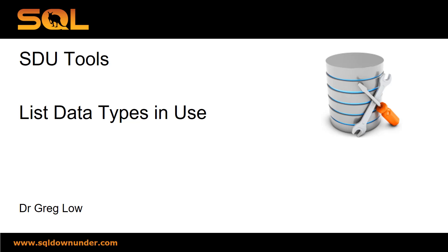Hi, this is Greg Lowe. This is another video in the SDU Tool Series, and this is on listing data types that are in use in the database. This is often useful because it lets us work out if data types have been used consistently throughout the database. It also lets us work out if data types that we do not wish to use have been used.